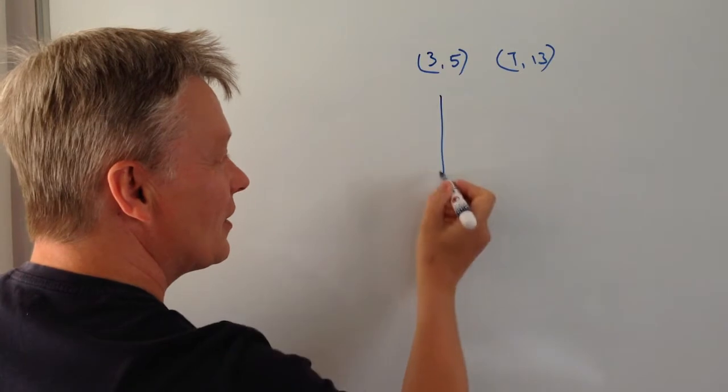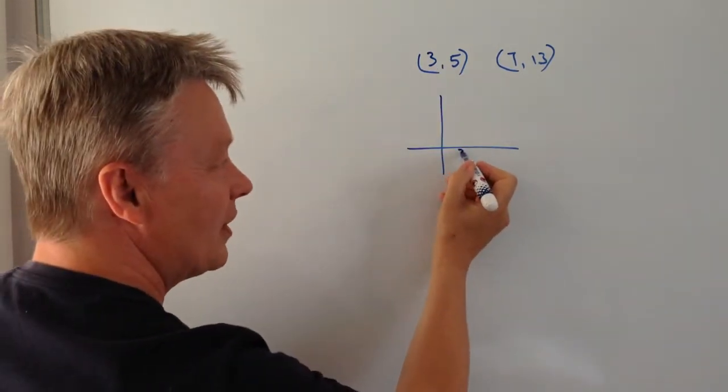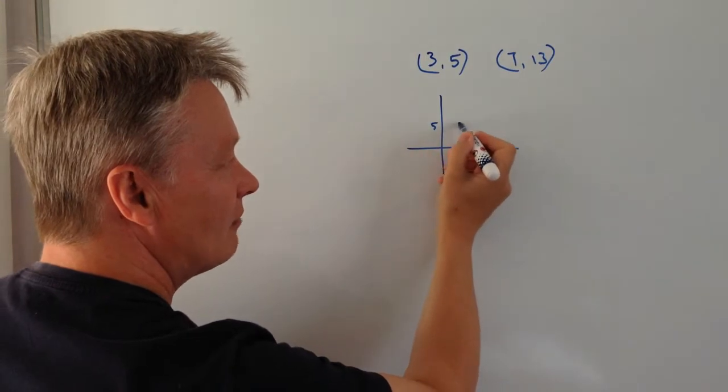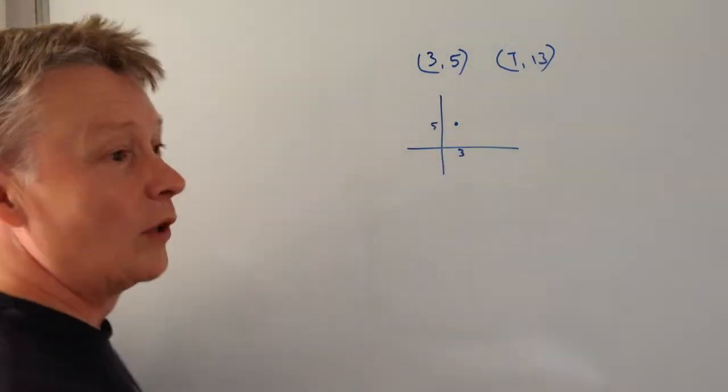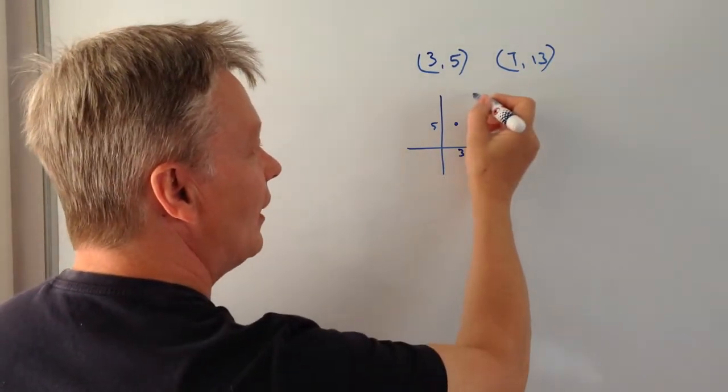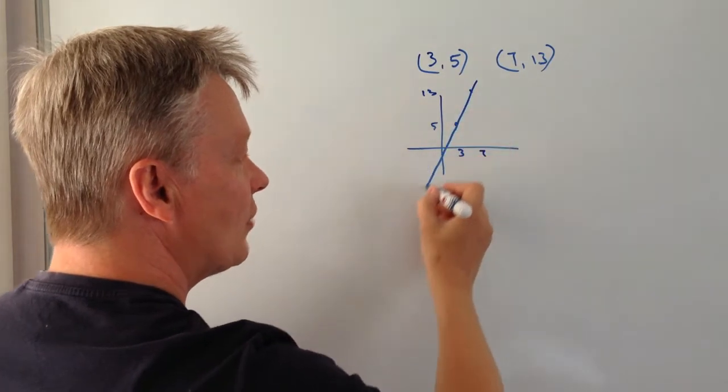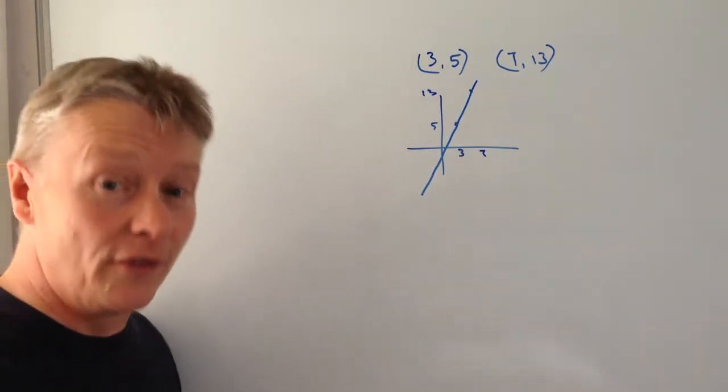So I'm just going to draw a quick sketch of what that would look like. We've got one coordinate which is (3,5), something like about there, and then we've got one coordinate which is (7,13), so 7 and 13, something like that. And we're told there's a straight line that passes through those coordinates.